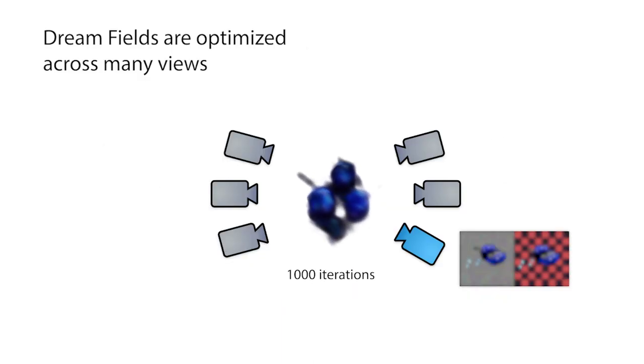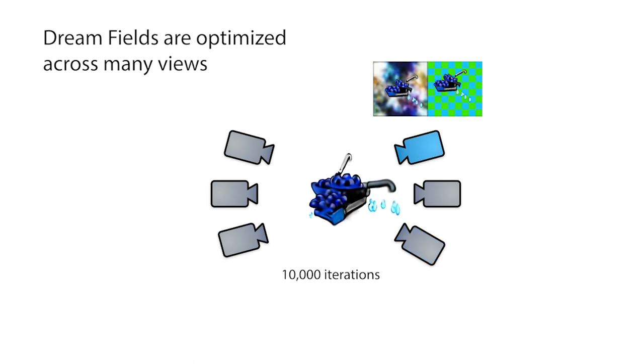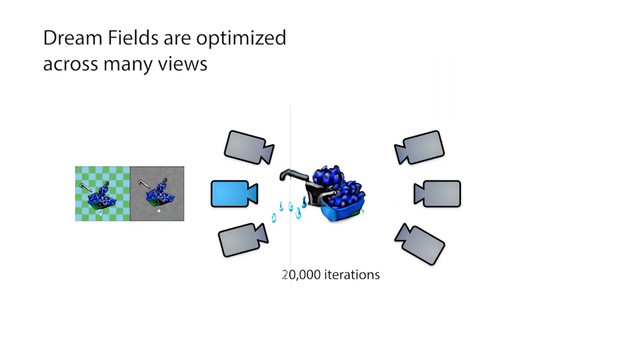Over 10,000 to 20,000 iterations of training, the geometry and texture of a dream field improves in realism. Here we show different perspectives at different iterations as well as the three types of background augmentations used in the work.